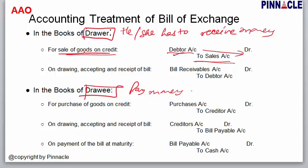When the drawer purchases goods on credit, he debits the purchase account because he has incurred purchase expenses. Then the creditor — the giver of goods — is credited, because by the golden rule: debit the receiver, credit the giver.